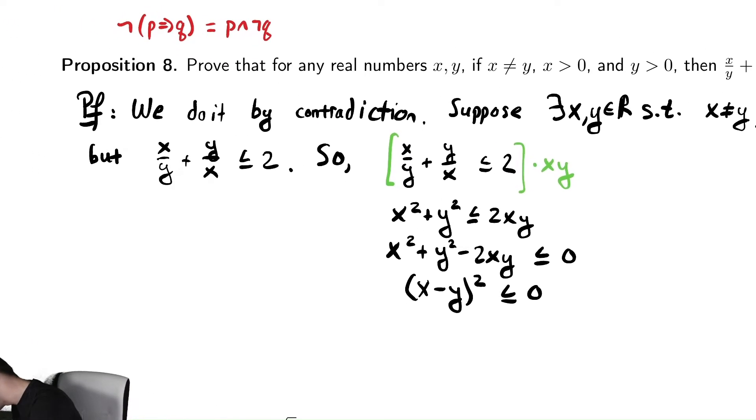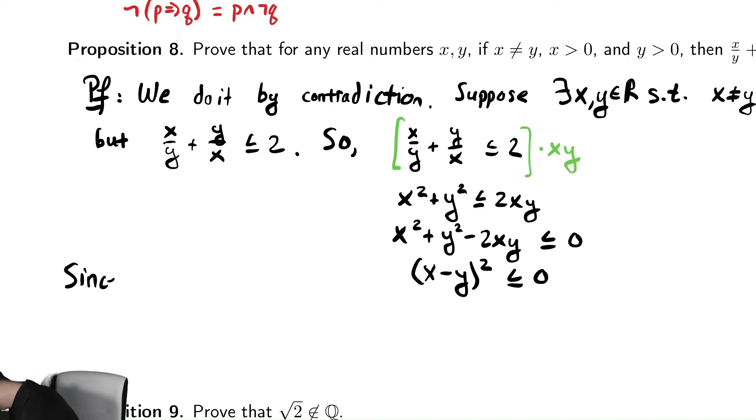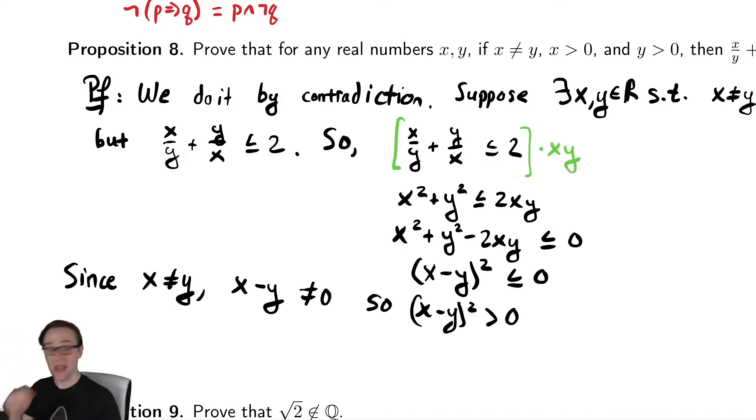And we see that since x does not equal y, x minus y is either greater than zero or less than zero. The point is it's not equal to zero. So x minus y quantity squared must be greater than zero. And now we can see our contradiction. I have, using the facts I had available from the proof, that that one quantity is less than or equal to zero and that exact same quantity is greater than zero.